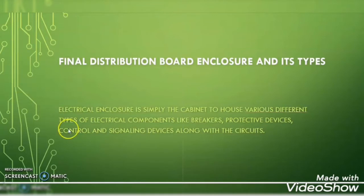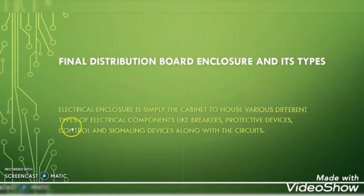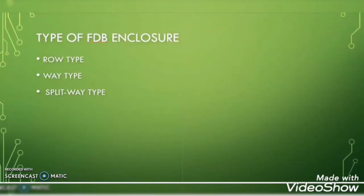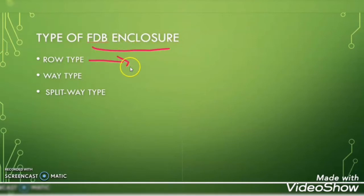What is electrical enclosure? An electrical enclosure is nothing but a cabinet that houses various different types of electrical components like breakers, protective devices, control devices, and signaling devices along with the circuit. There are many types of electrical enclosure, but our focus in this video is to understand the type of final distribution board enclosure based on the breaker arrangement.